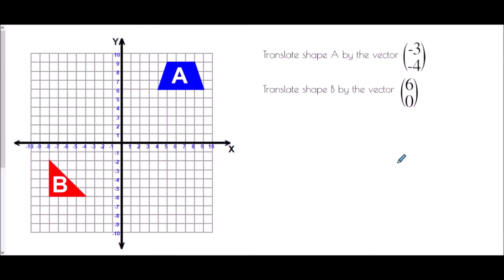Next we've been asked to actually translate a shape by a vector. We've been given the grid and the vector to use. We'll take a single corner and translate shape A by the vector negative three, negative four. Negative in the x direction means left; negative in the y direction means down. So we go three to the left — one, two, three — and four spaces down — one, two, three, four.